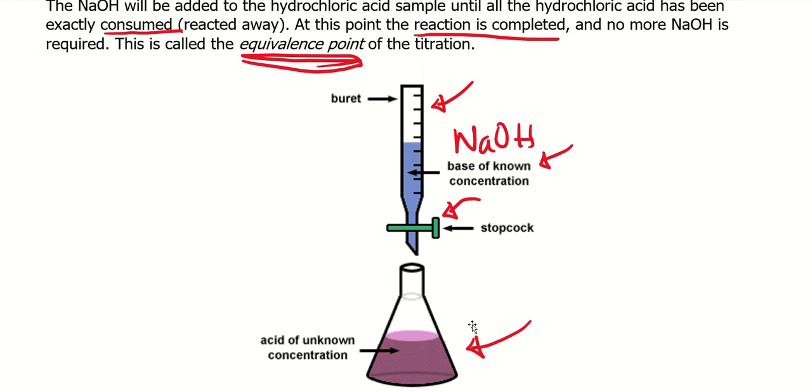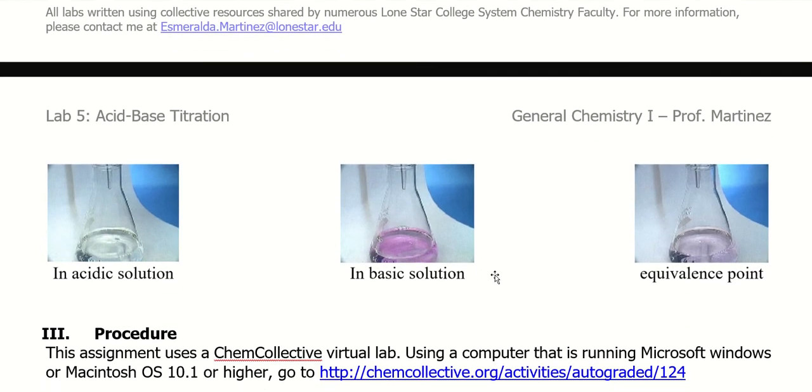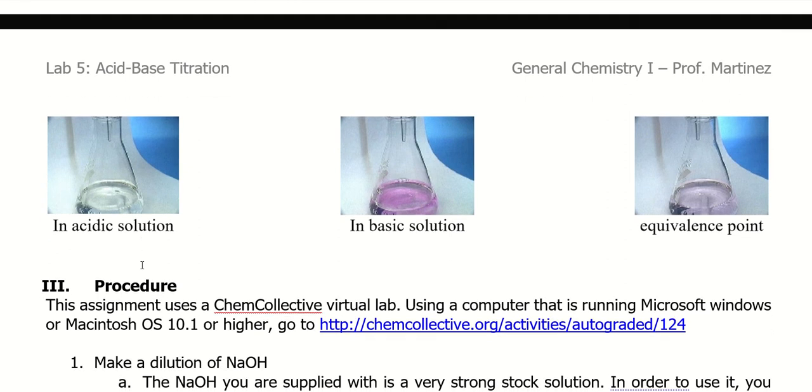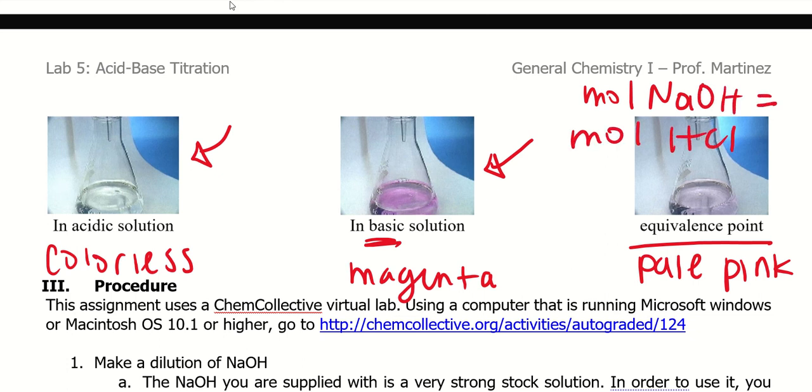And that is a color change. So here it describes the phenolphthalein. This is a really nice distinction. This picture shows you the distinction between whenever you have an acidic solution versus a basic solution versus the equivalent point. So phenolphthalein, it's colorless in acidic solution, it's very magenta pink in very basic solution, and then it's this kind of beautiful pale, pale pink at the equivalent point. So this is exactly whenever the mole of NaOH equals the moles of HCl. So that's the perfect ratio, basically.